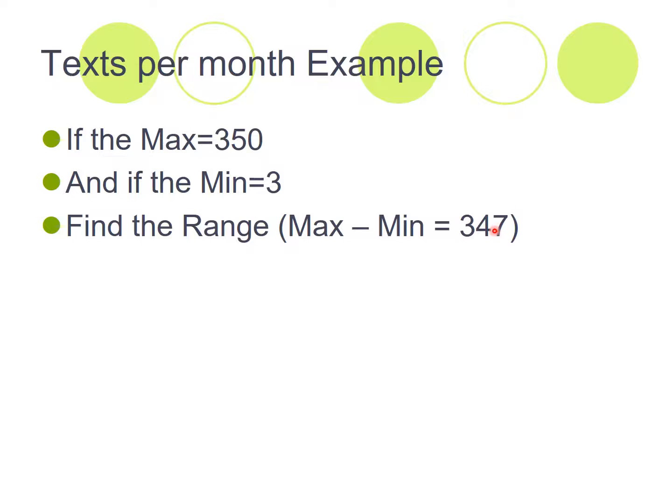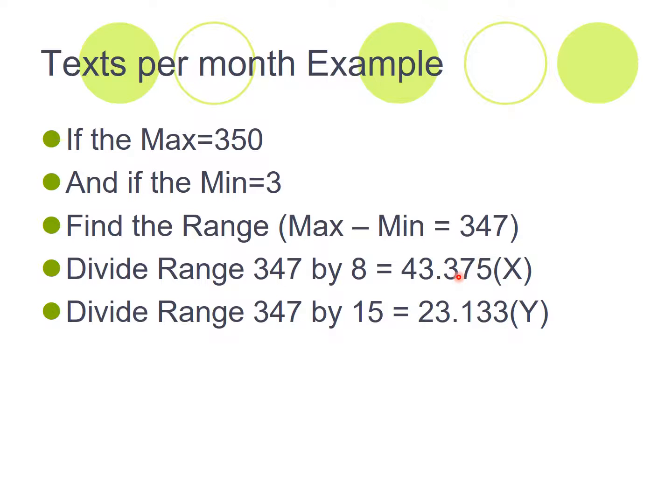The method then said, take your range and divide by eight. So 347 divided by eight gives us roughly 43. Take the range here again, the 347 and divide by 15, and we get roughly 23. Now the next step is the bit that people often have difficulty with. We have to find a nice round number between 23 and 43. So going up from 23, 24, 25.